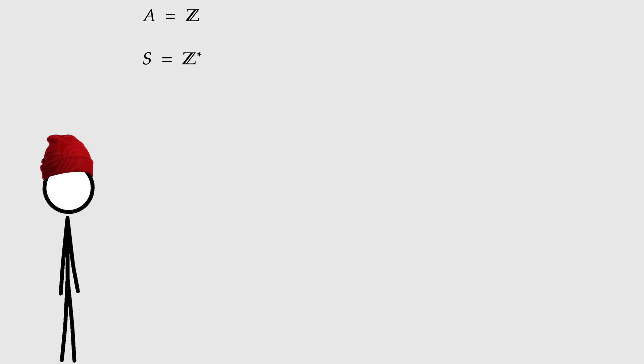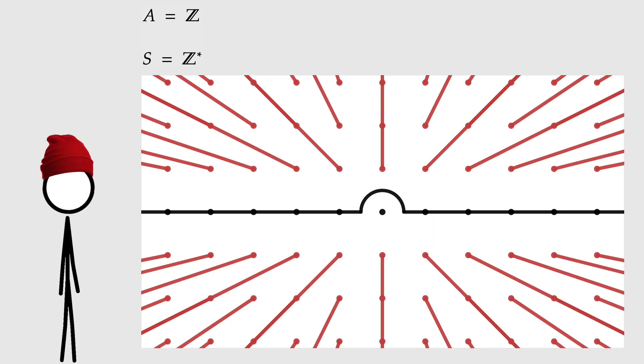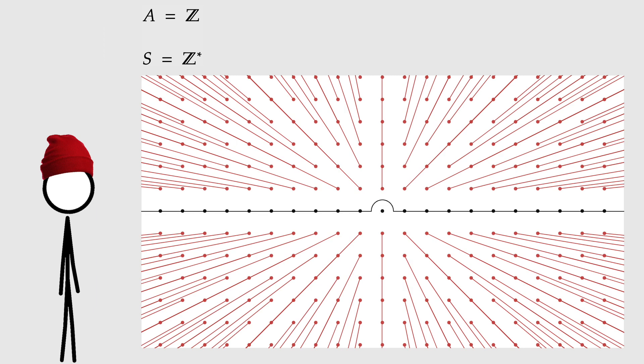For example, the wheel algebra we created in part two was the special case where A was the set of integers, and S was the set of integers except zero. But we can do it with different sets, of course, and then we get different wheels. I can't tell you what they are, but I can show you. Remember the visual diagram that we created in part two? Let's bring that back, and let's zoom out to get a bigger picture. With this, we can visualize the structure of our wheel.